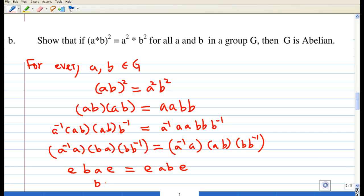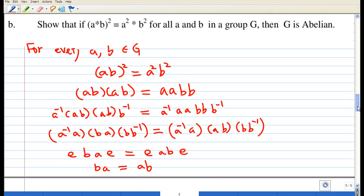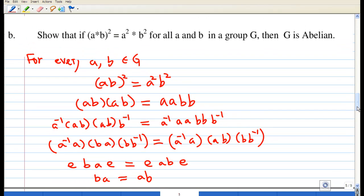So the left side is ba. After multiplying by identity on the left and right, the right hand side will be ab for a similar reason. So from here we conclude that ba = ab for all a and b in G, so G is abelian. This concludes the proof.